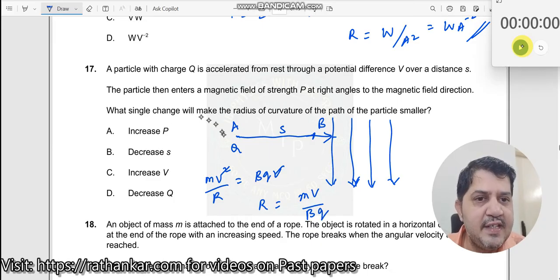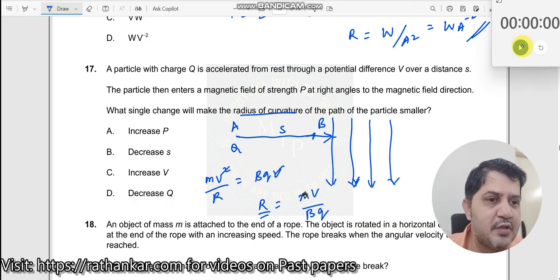What is he asking? What single change? One of these parameters should be changed so that the radius of curvature, this R of the path of the particle, will become smaller. R becomes smaller. What should I change? Simple. M should reduce. Is there a change in M here? There is no change in M here, so this is not the right option.